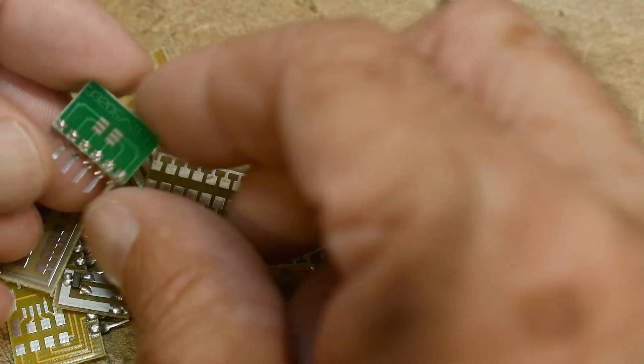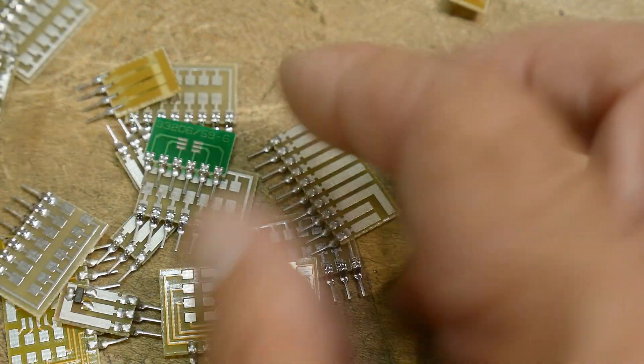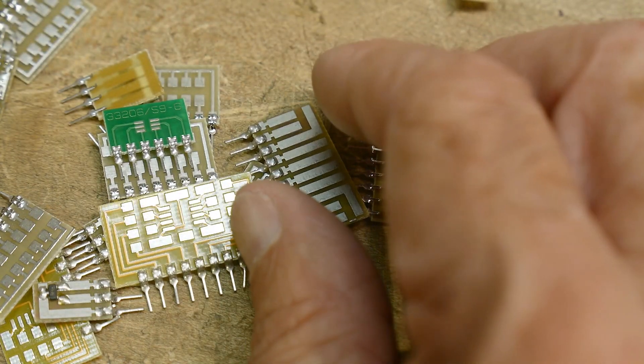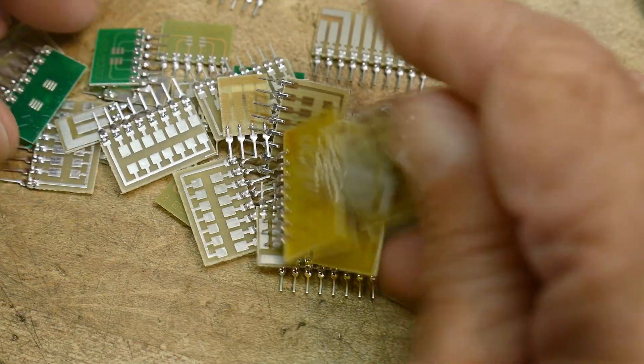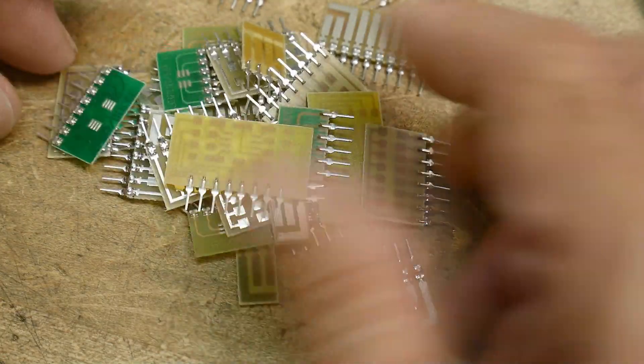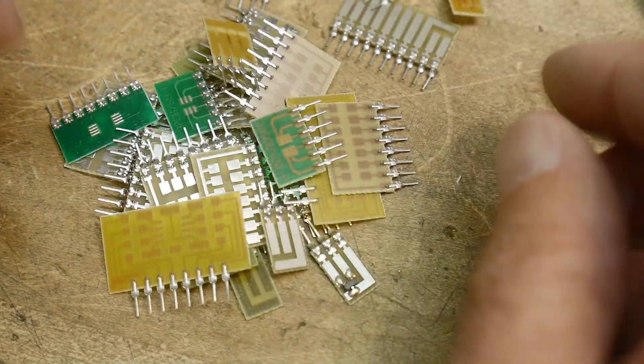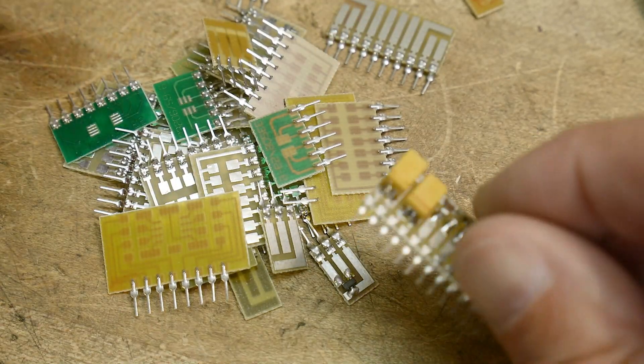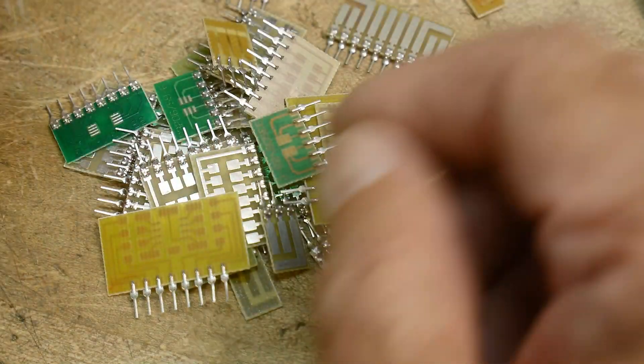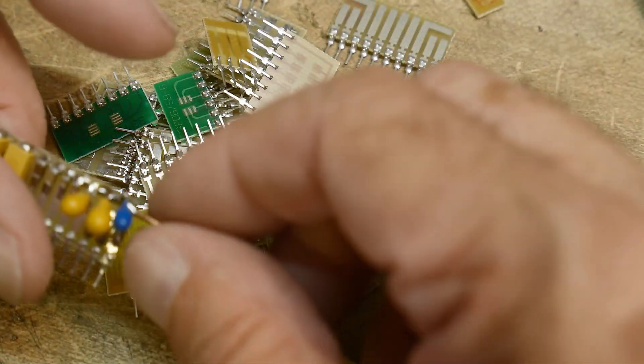They're all different and then they have some that are for specific packages anyway. Let me not get these mixed up here. There's all kinds of shapes and sizes and you can go buy them. I think even Anchor Electronics carries these in their store.